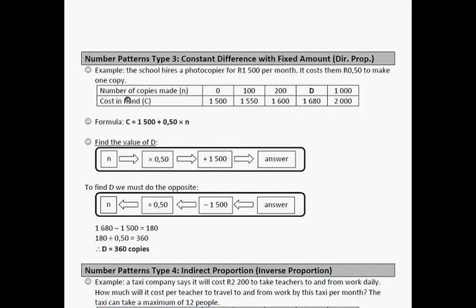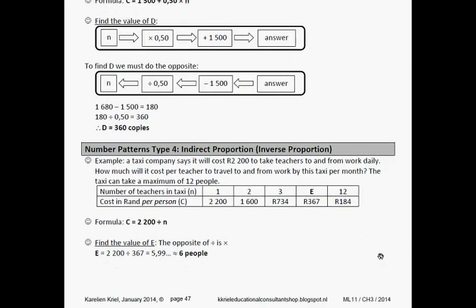Let's quickly go over it again. The formula is 1,500 rand for the photocopier per month, remember from the previous video, plus 0.5 times n. So we're working backwards. We first have to minus 1,500, the fixed amount. Then we get the amount that we will pay per copy. So that would be 180, so the amount that we pay for the copies. And then we divide it by the price, and that gives us 360.